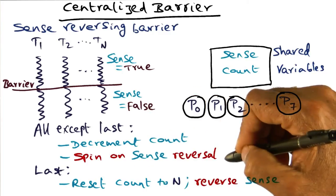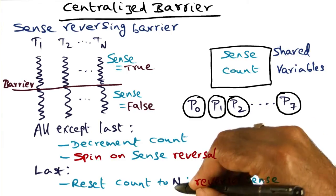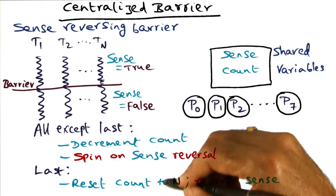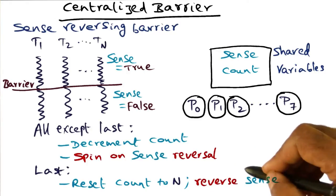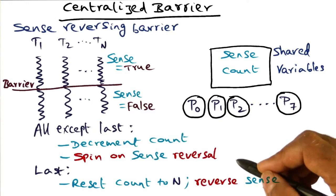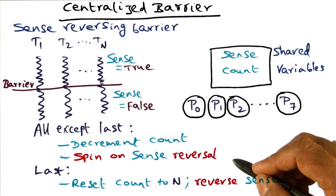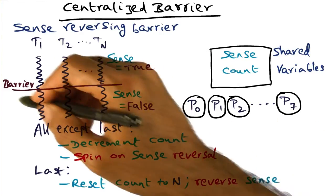And all the other guys are waiting on the sense reversal. So decrementing the count itself and changing the count value, that doesn't do anything to these threads. Only when the sense flag is reversed, all these guys come out of the spin loop and they can go on. So you can see now that we have only one spinning episode per barrier.